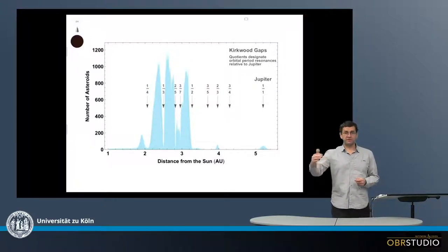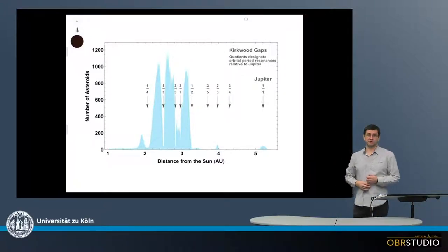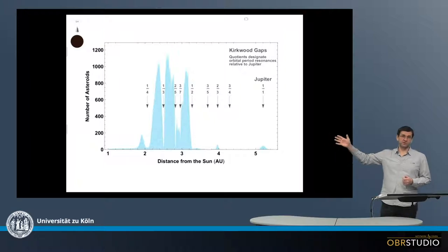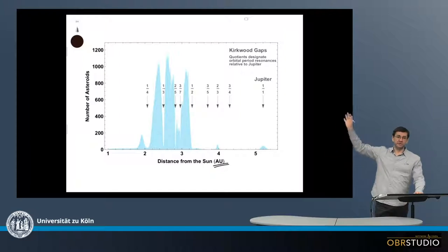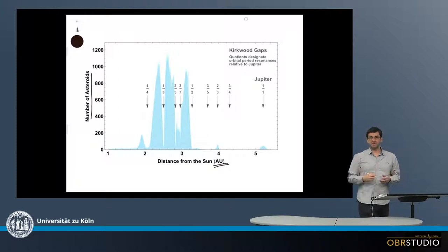The number of asteroids varies with increasing distance from the Sun, and this is what is shown on this plot here. On the x-axis is the distance from the Sun in astronomical units, and on the y-axis is the number of asteroids from a subset of all the available orbital asteroid data.